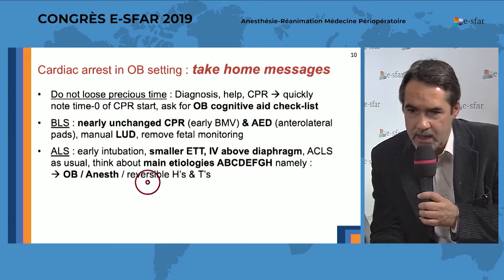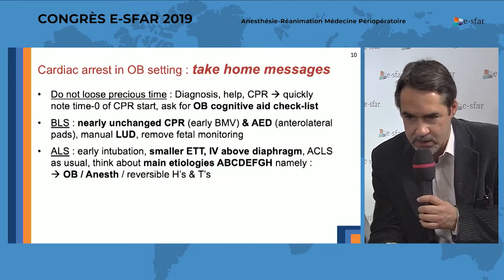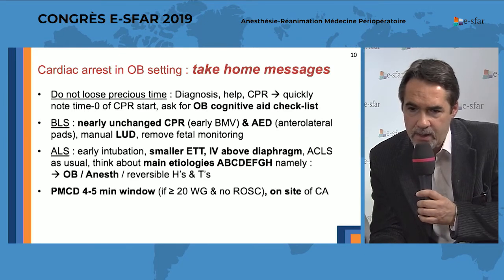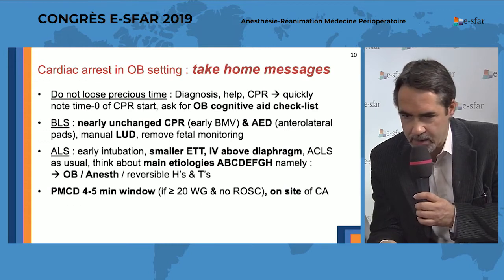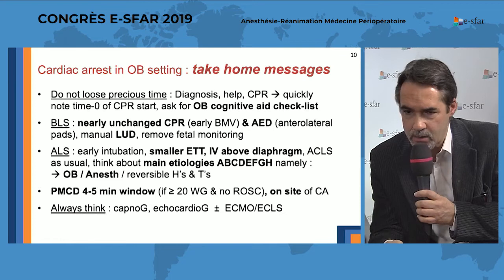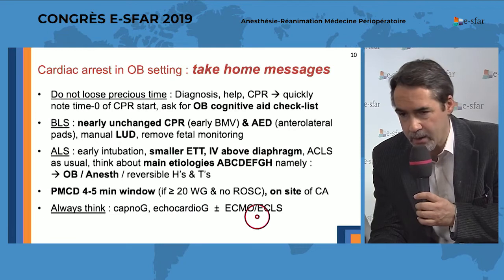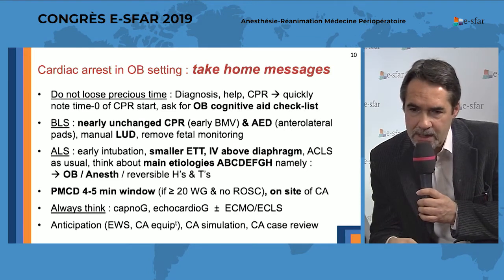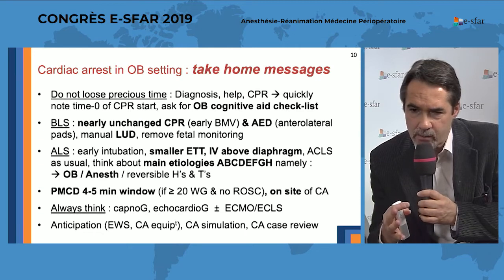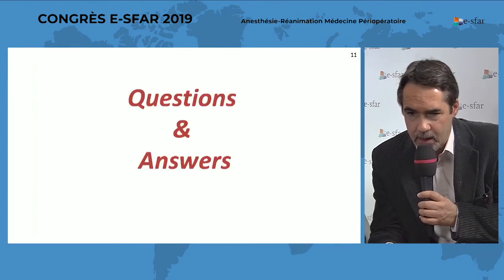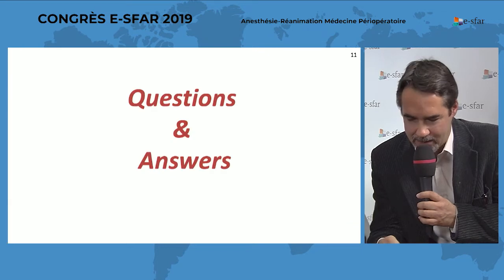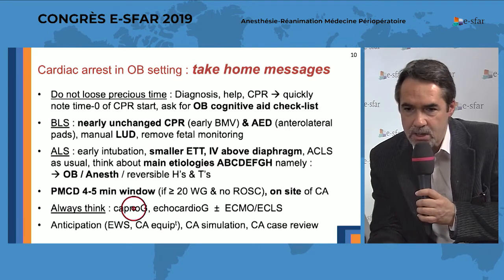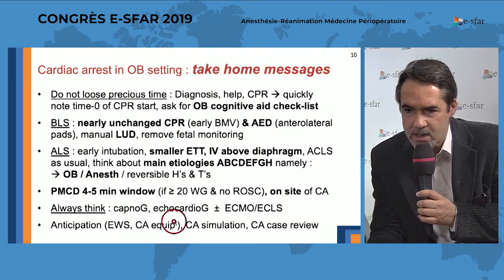Particularly focus on OB and anesthesia reversible causes plus non-specific causes. Perimortem caesarean delivery within four to five minutes should be done on site of the cardiac arrest. Always think about using capnography, asking for echocardiography, and the potential indication of ECMO or extracorporeal life support. Last but not least, it is very important to think about institutional involvement — anticipation, early warning scores, cardiac arrest equipment, simulation scenarios, and cardiac arrest case review.